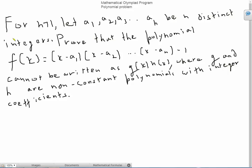So first off, let's solve the problem. For n greater than 1, let a1, a2, a3, and so on, an, be n distinct integers. Prove that the polynomial f(x) equals (x - a1)(x - a2)...(x - an) minus 1 cannot be written as g(x)h(x), where g and h are non-constant polynomials with integer coefficients.